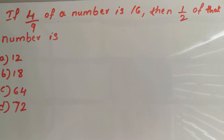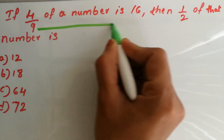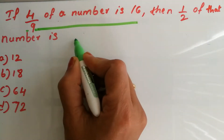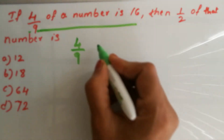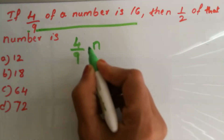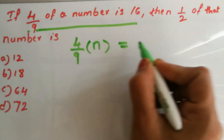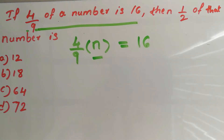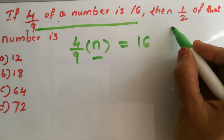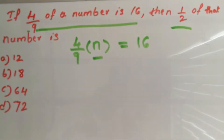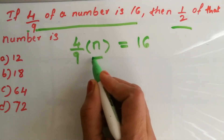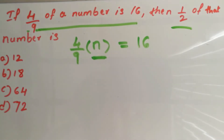4 over 9 of a number is 16. What is given here? 4 over 9, or 4 ninths, of a number. Let's take that number as n. 4 ninths of a number is 16. You don't know which number they have taken. Then what is half of that number? First we have to find what that number n is. I have taken that unknown number as n.